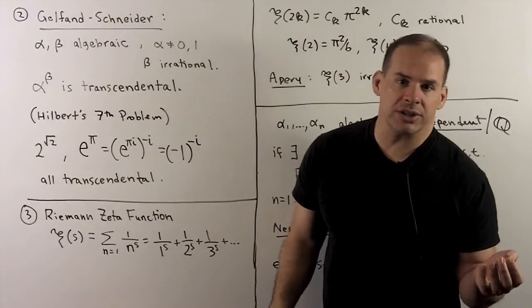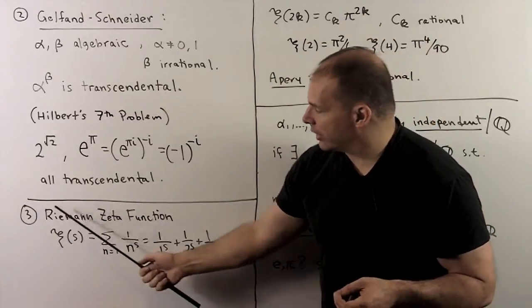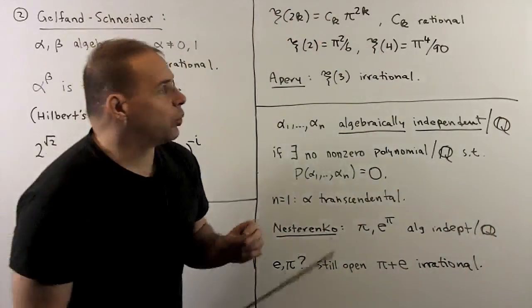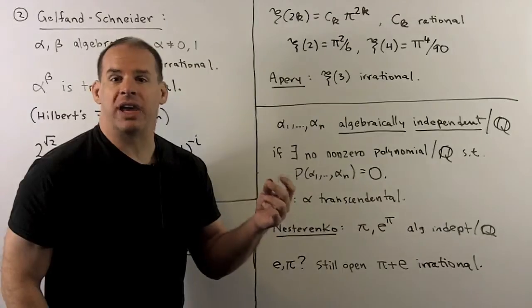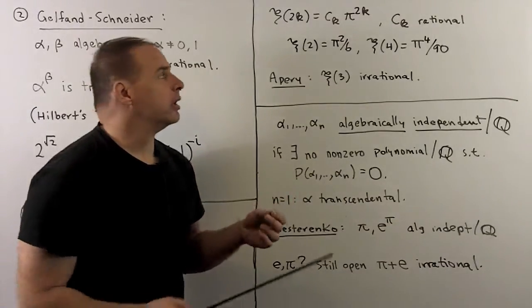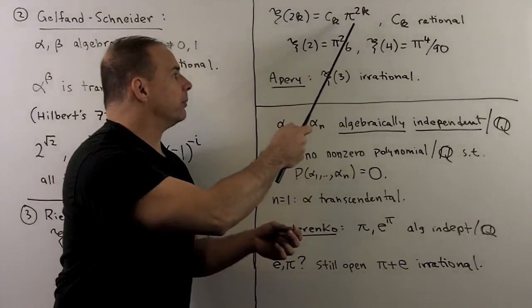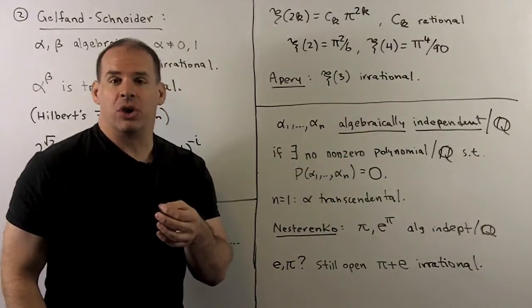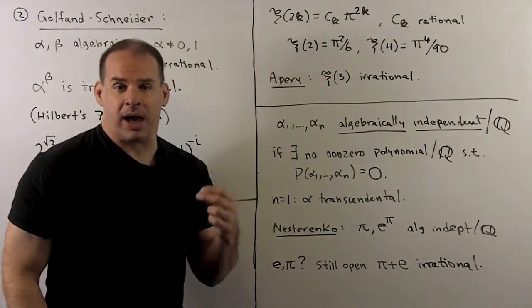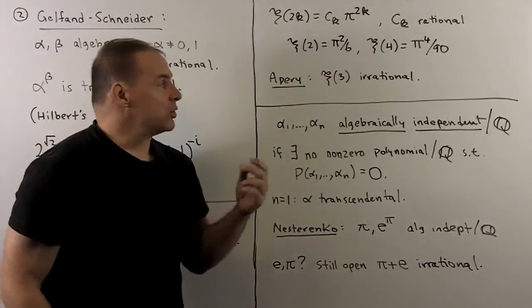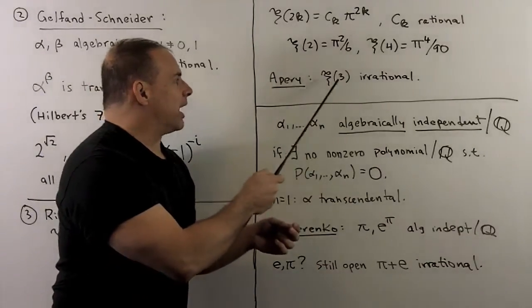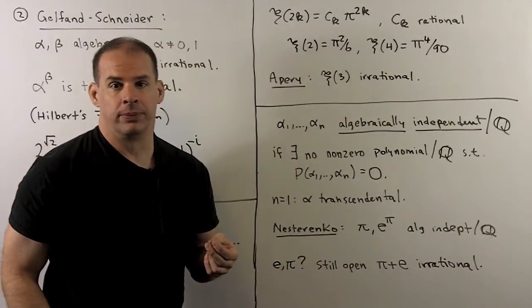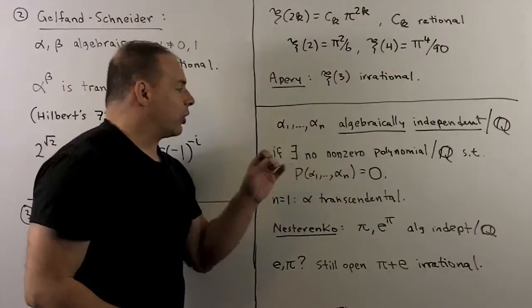Now for other directions, one way to go. We can look at the Riemann zeta function. If we apply zeta to twice a positive integer, it's known this is rational times an even power of pi. So that's always going to be transcendental. On the other hand, not much is known when we apply zeta to an odd positive integer. Here a big result is zeta applied to three is irrational. Still don't know if it's transcendental.